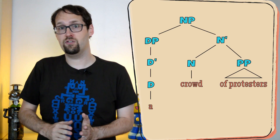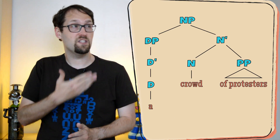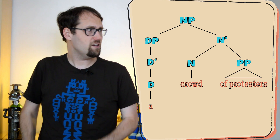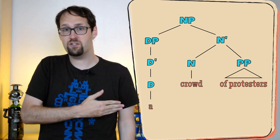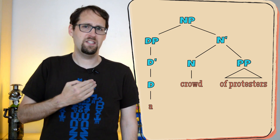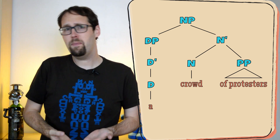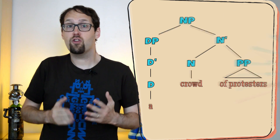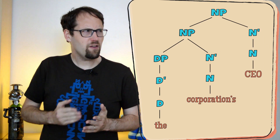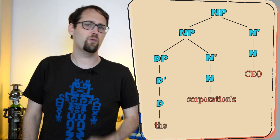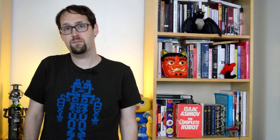Take a phrase like a crowd of protesters. Around the head crowd, there's the specifier position way up at the top of the NP, where the determiner A goes. And that prepositional phrase of protesters sits down in what's called the complement position. That lonely DP with its single solitary determiner can make the tree seem a bit empty up there. But given that we also see more top-heavy possessive phrases like the corporation CEO, it looks like full noun phrases can fit in that specifier position too.